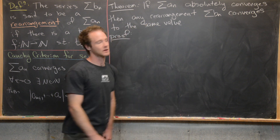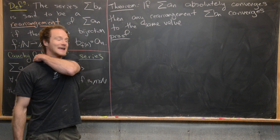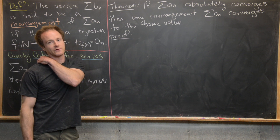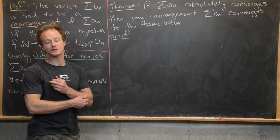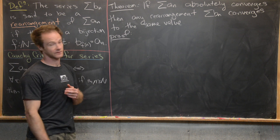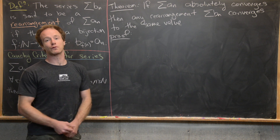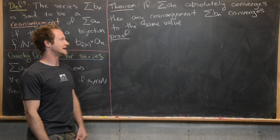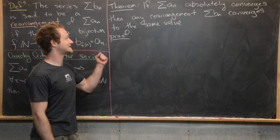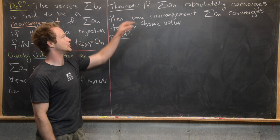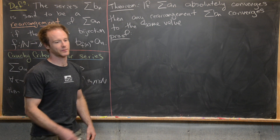So let's look at what we will prove. We will prove that if A_N is an absolutely convergent series — in other words the series formed by the absolute values of the terms converges — and B sub N is a rearrangement of the series A sub N, then the series B sub N converges to the same value as the series A sub N.